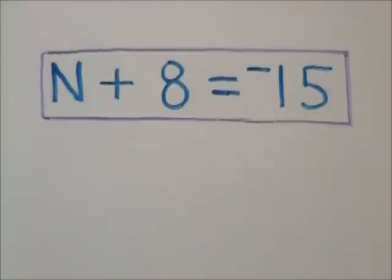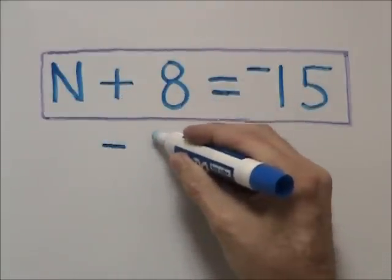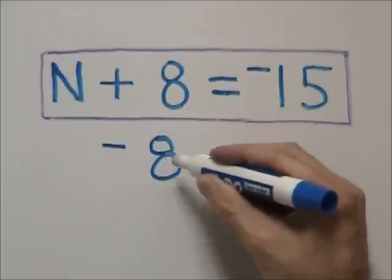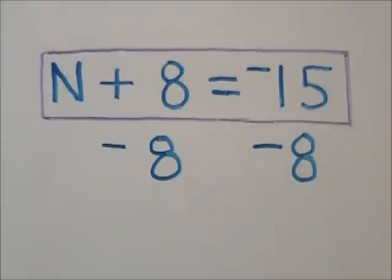In order to solve this problem, we're going to do the opposite operation of the equation. The equation is addition, therefore we're going to subtract 8 from both sides of the equation.